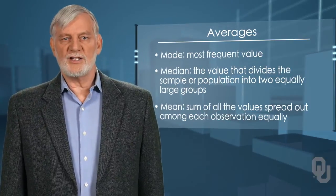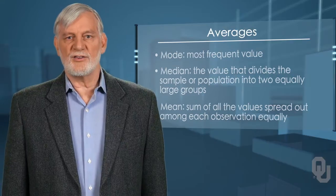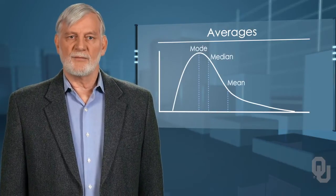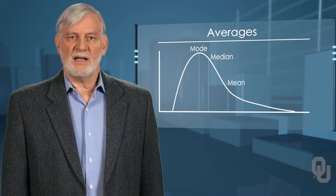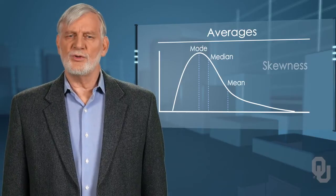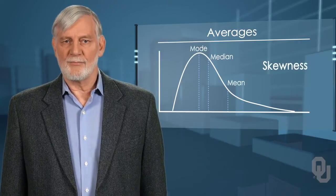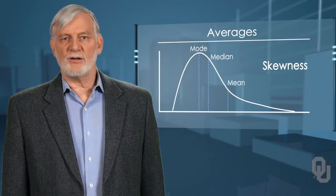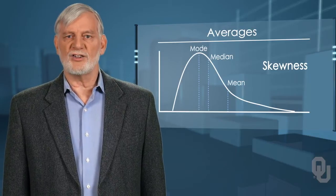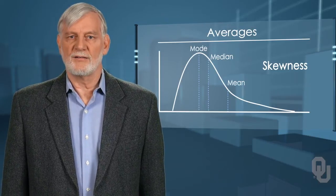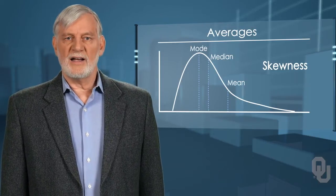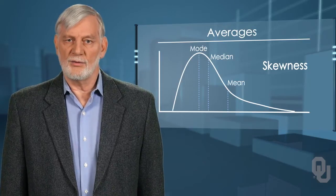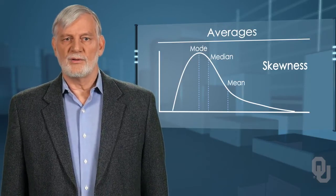By looking at the relationship among these three averages, we can learn more about our data. The key to this relationship is the skewness of the data. By skewness, we mean how the data looks in terms of where the most observations congregate. Are the data concentrated at one end or the other? If so, then we would call it skewed.